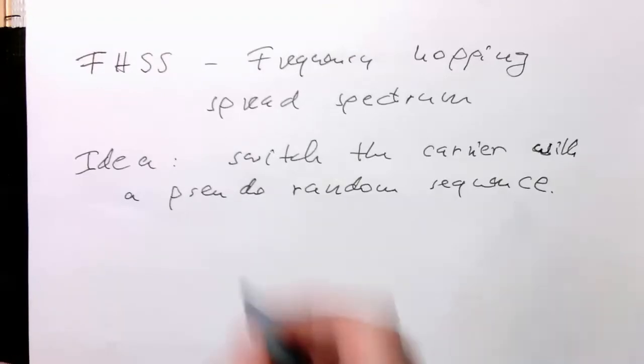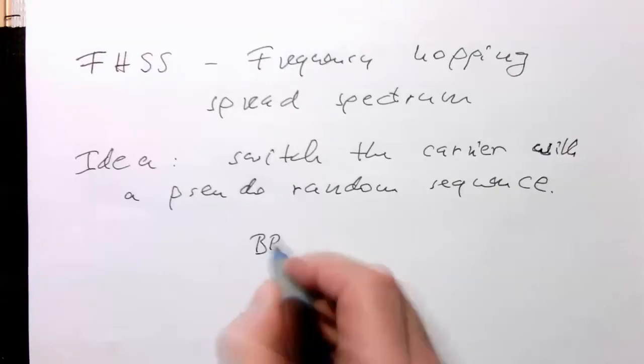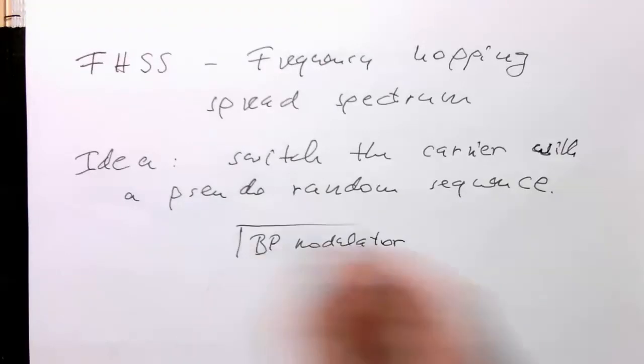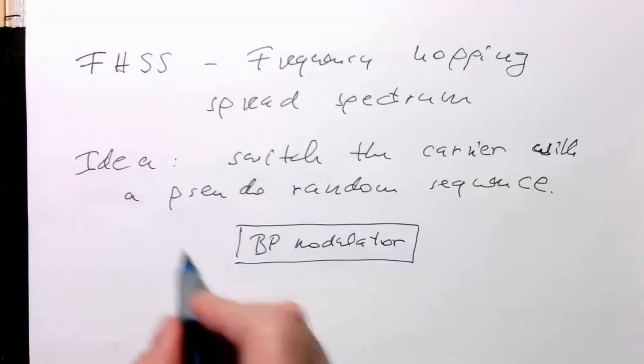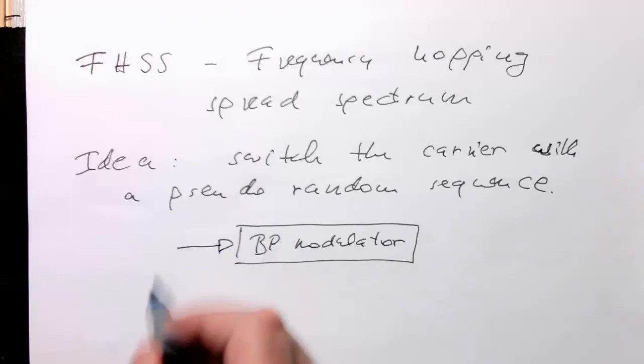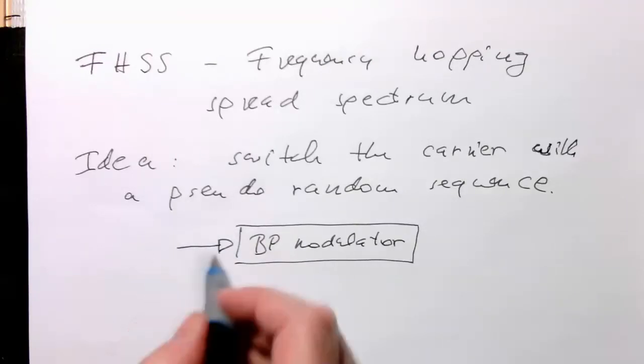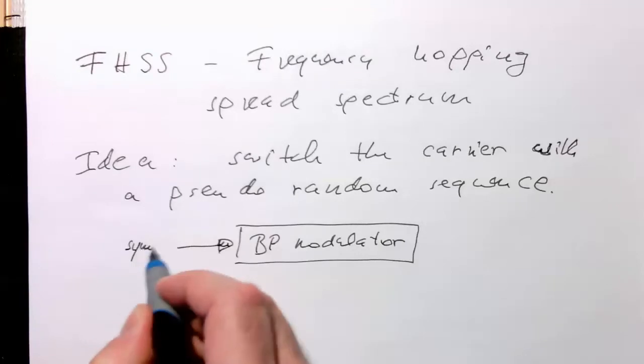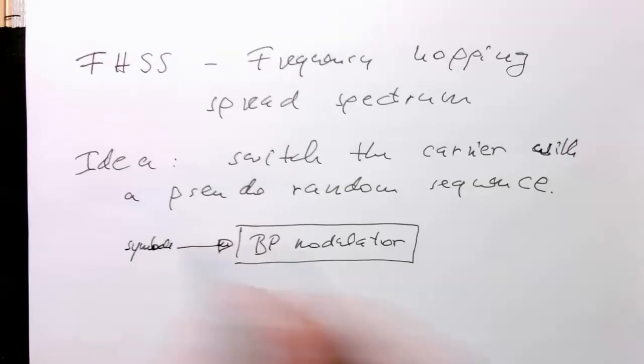Imagine, we've got our classical bandpass modulator. So the bandpass modulator gets its digital symbols in here. So here's symbols. And here the input is the carrier frequency FC.